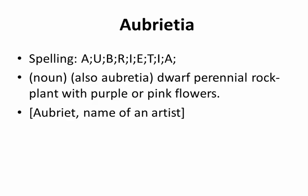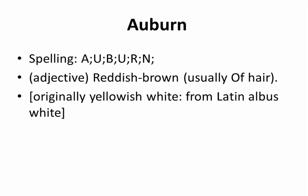Aubretia. Spelling: A-U-B-R-E-T-I-A. Noun. Also Aubrietia. Dwarf perennial rock plant with purple or pink flowers. Named after an artist.